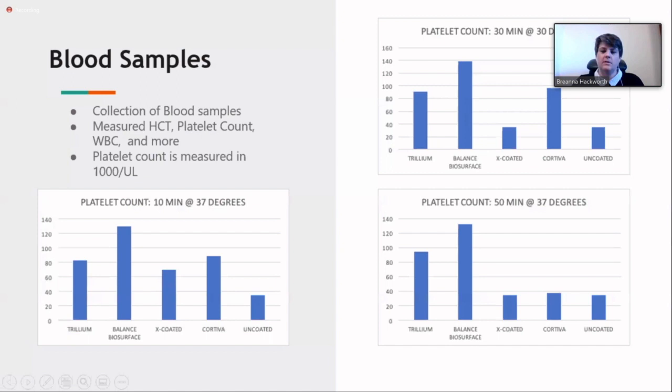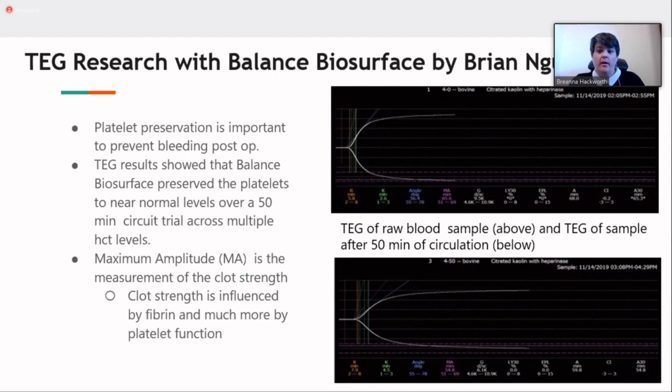In fact, a first-year student named Brian Wynn elaborated on this and used TEG to look specifically at balanced biosurface. What he looked at was the platelet preservation. For those who are not familiar with TEG, it can tell you a lot. But what we were focusing on was the maximum amplitude, or the MA value, which is the measurement of clot strength. Now, that's this value right here between these two lines. As we know, platelet preservation is very important to prevent post-operative bleeding. What he found was in the raw sample here is considered a normal clot strength. After a 50-minute trial run, the MA value was still within normal range. So that's really important because not only are those platelets being preserved, but they're also functional after that 50-minute trial.